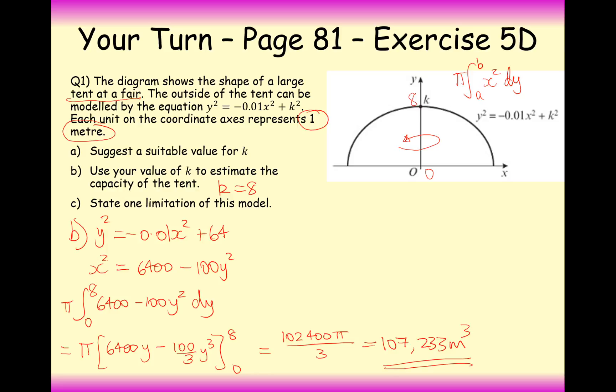State one limitation of this model. Well, as far as I can tell, the tents that I've seen in the past aren't perfectly circular. So I would say here that it's very difficult for a tent to model a curved line, given that tents generally form straight lines on their boundaries. Okay. So it's very difficult for the tent to form the perfect curve that an x squared graph gives us.